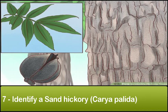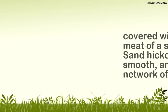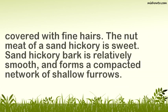Step 7: Identify a Sand Hickory (Carya pallida). The sand hickory has matte, light green, narrow, pointed and smooth-edged leaflets. The nuts are the smallest of the hickory species, averaging only 0.5 inch to 1.45 inches long, with thin husks and shells and light-colored nut meat. They are also round and thick, covered with fine hairs. The nut meat of a sand hickory is sweet. Sand hickory bark is relatively smooth and forms a compacted network of shallow furrows.